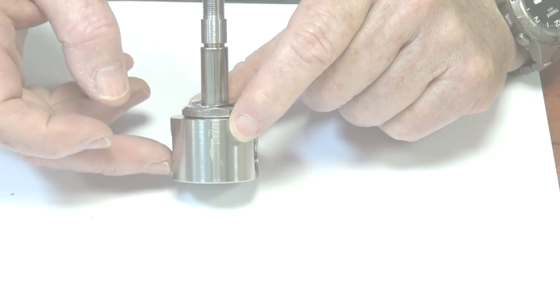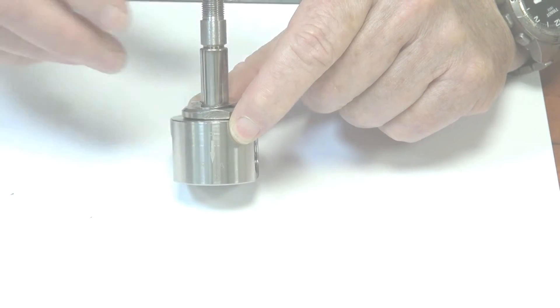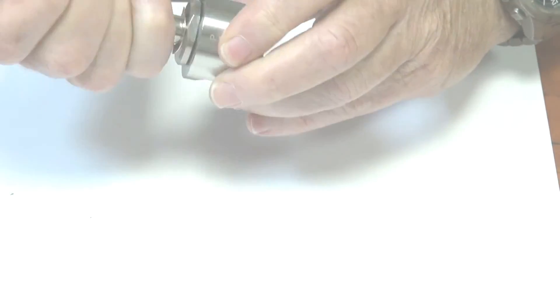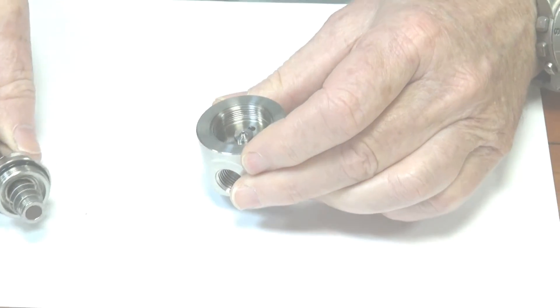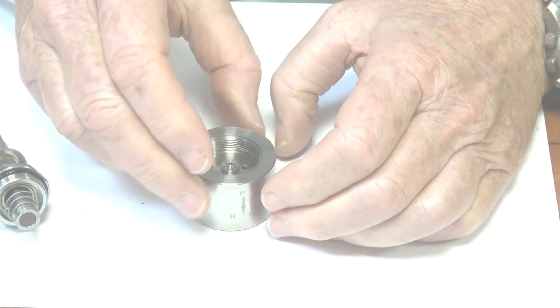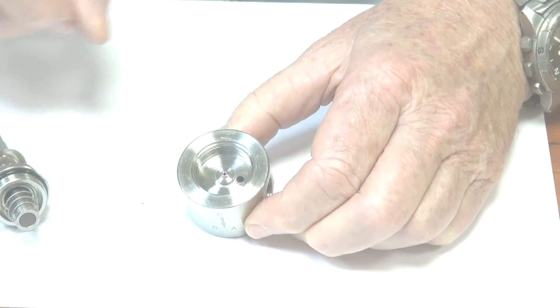I'll just take this apart. Inside here we have the seat, so normally this armature is seated down on there.